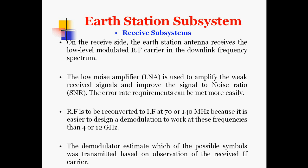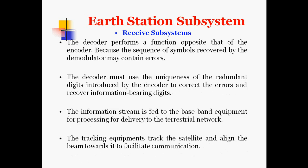The radio frequency is reconverted to intermediate frequency — near about 70 or 140 MHz — because it is easier to design a demodulator to work at these frequencies than at 4 or 12 GHz, so a down-converter is used. The demodulator estimates which of the possible symbols were transmitted based on observation of the received intermediate carrier. The decoder performs the opposite function of the encoder: it uses the uniqueness of the redundant digits introduced by the encoder to correct errors and recover information-bearing digits. The information stream is then fed to the baseband equipment for delivery to the terrestrial network.